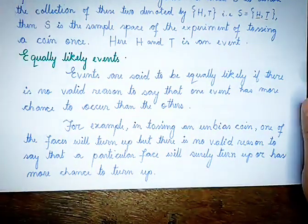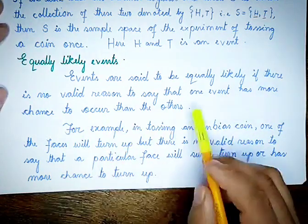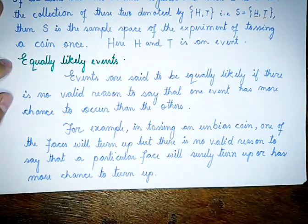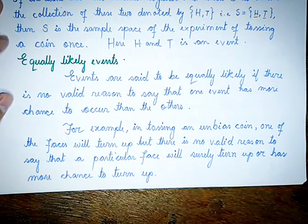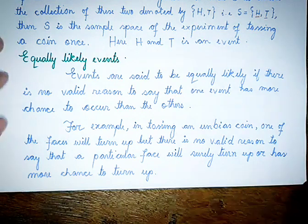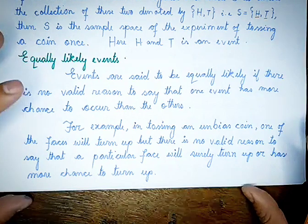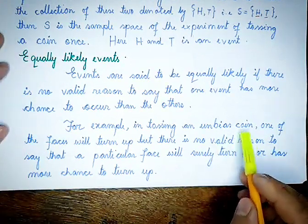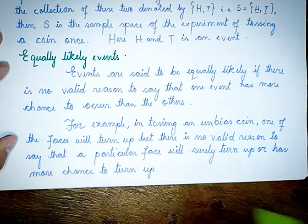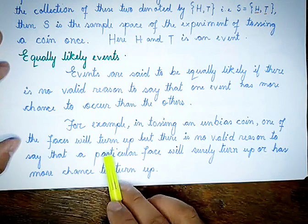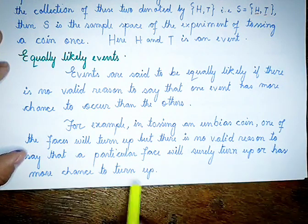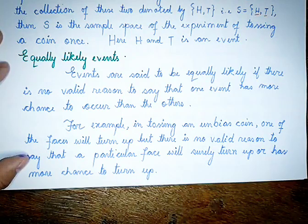If there is no valid reason to say that one event has more chance to occur than the other, such events are called equally likely events. For example, when a die is tossed, one of the faces will turn up, and there is no valid reason to say that a particular face will surely turn up or has more chance to turn up.